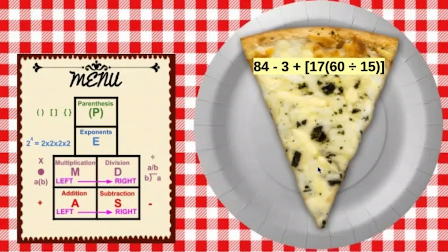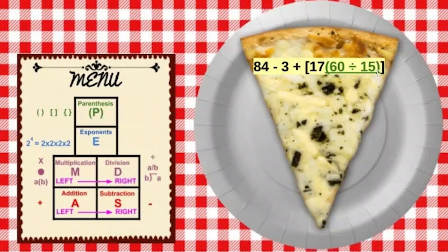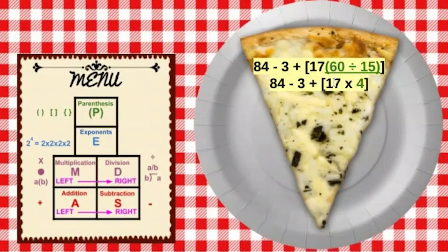Let's go to another problem. We have parentheses and brackets. We know to do the parentheses or brackets first. But inside the brackets, there are also parentheses — so we need to do the parentheses inside first. The first thing we're going to do is 60 divided by 15. What is 60 divided by 15? 4. Rewrite everything else. Now notice we have a number next to parentheses — like we talked about earlier — which means we are going to multiply. So it's the same as 17 times 4.